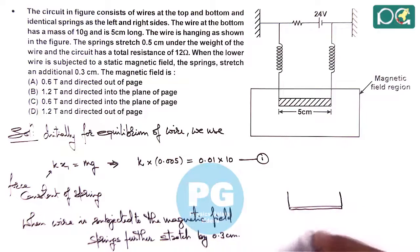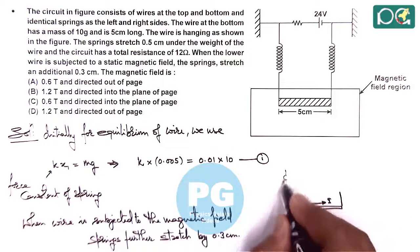Upward is the spring force. The current we can see is flowing in the rightward direction. The magnetic force must be downward so that the springs will further stretch by a distance x₂.